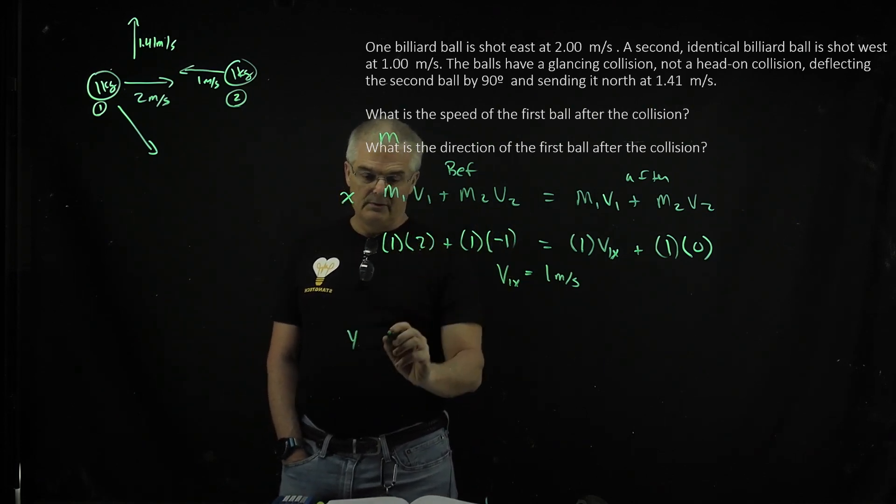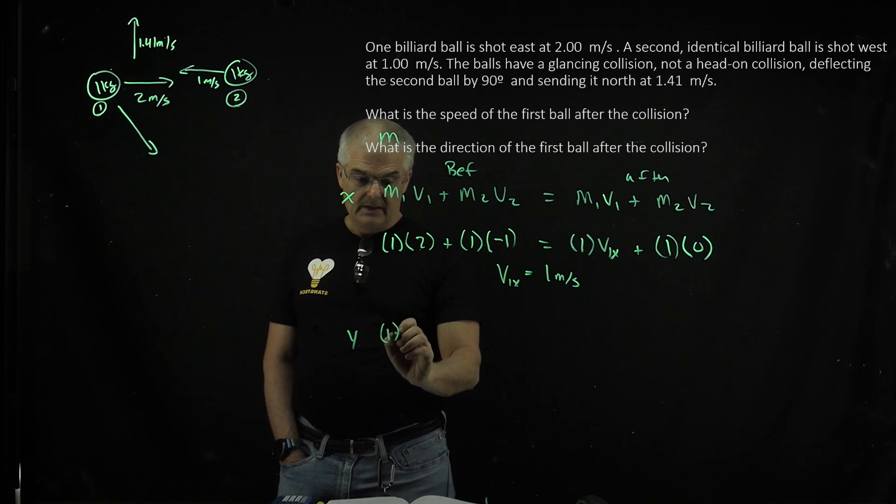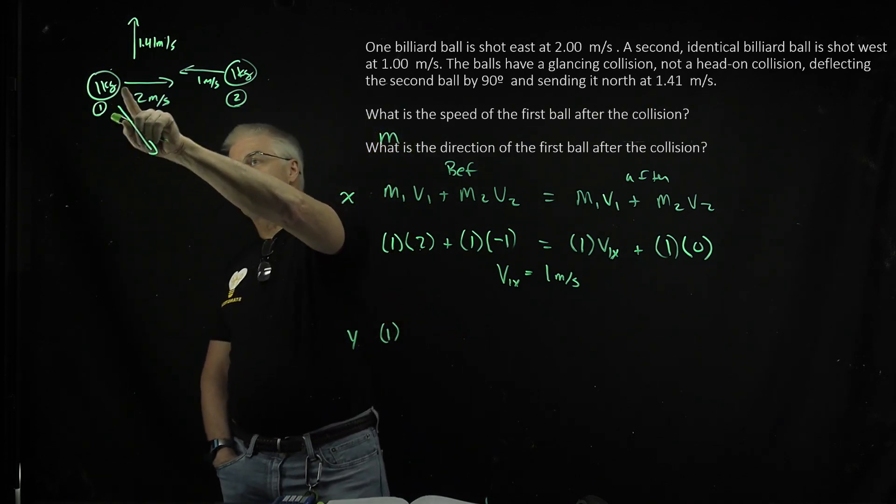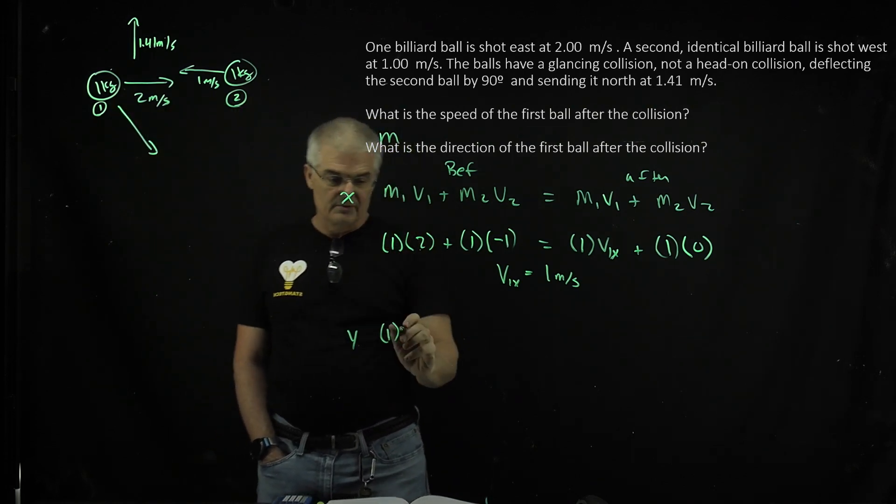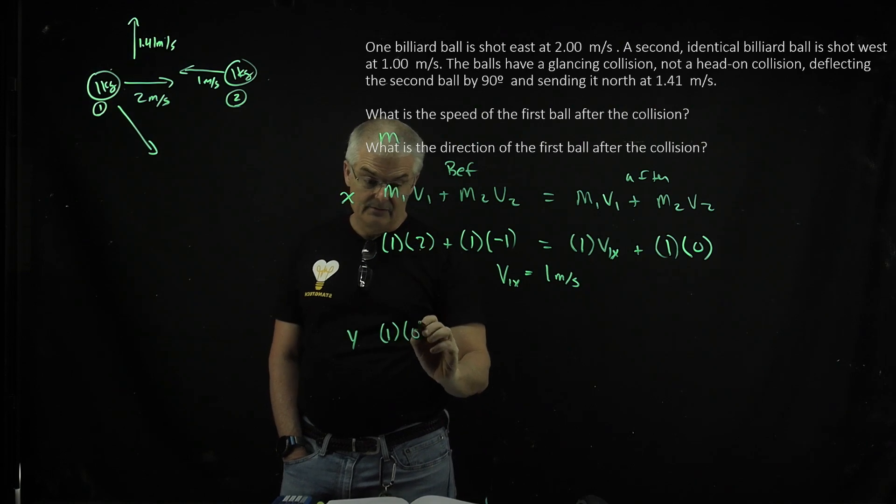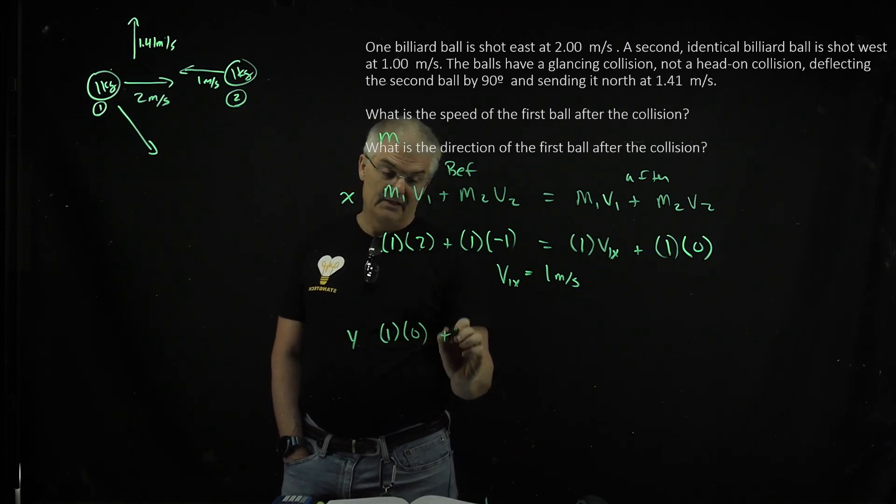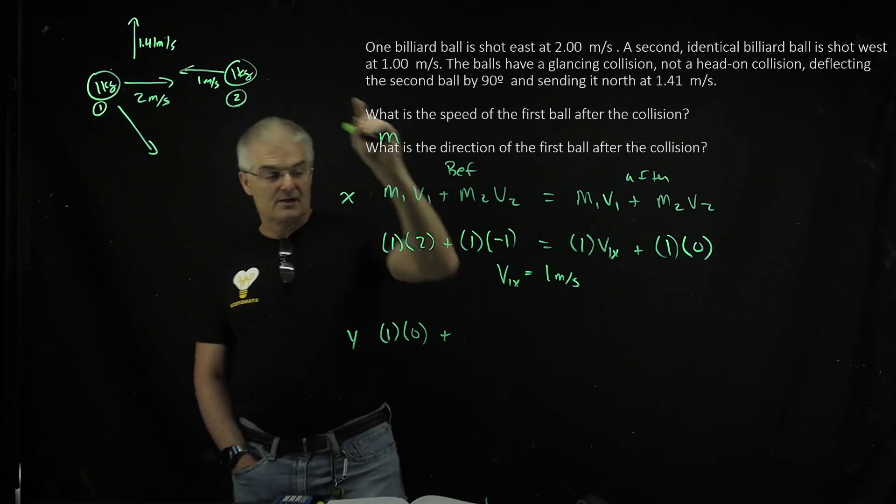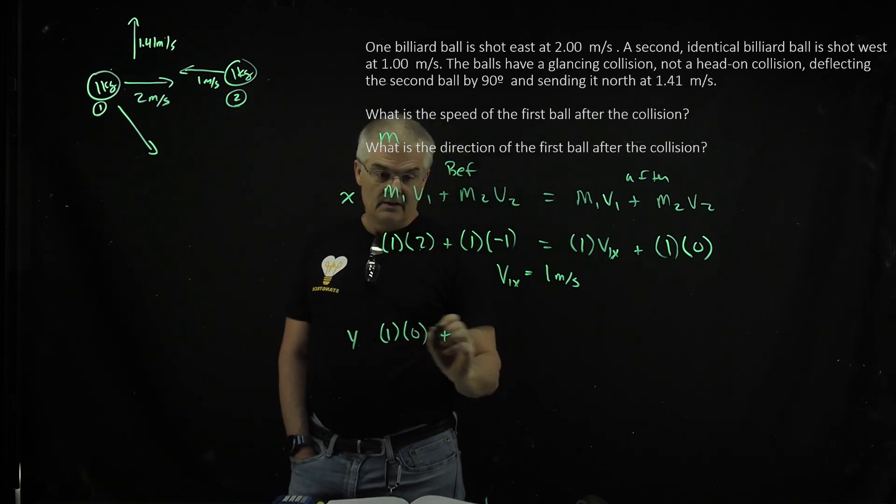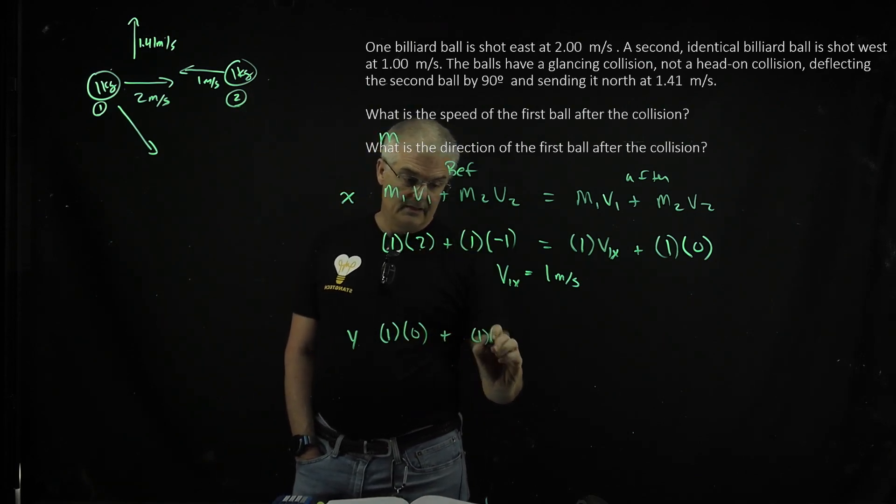Same equation applies, m1v1, what's m1? 1. Now in the y direction, originally he's just moving in the x direction, so it's 1 times 0, right? So, plus, he is moving only in the x direction, so he's going to be 1 times 0.